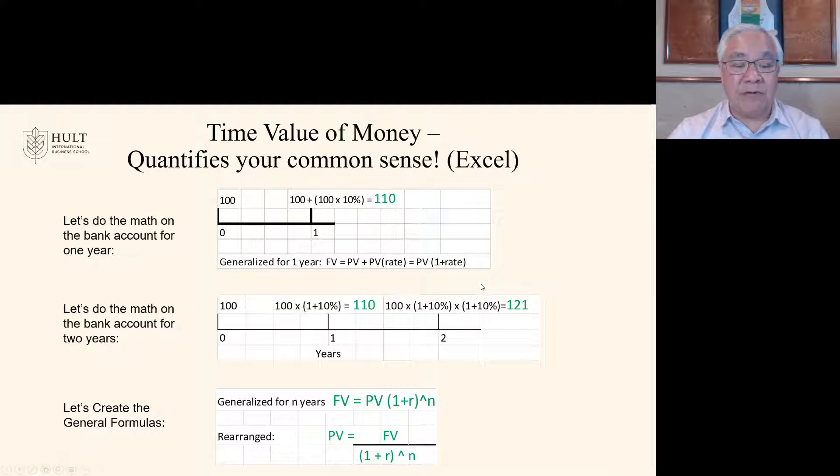Third is let's create a general formula. So if we look at this formula the future value equals the present value times one plus the rate of interest raised to the power of the number of years. So in year one raised the power of one in year two raised the power of two. So we can generalize to year n raised to the power of n. So you can say 57 years from now what would be worth? No problem. Raise it to the power of 57 if you got your answer.